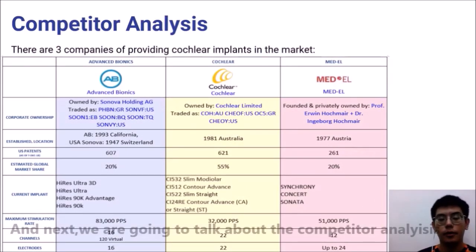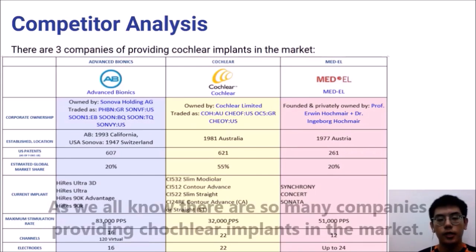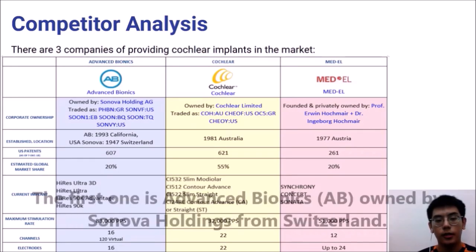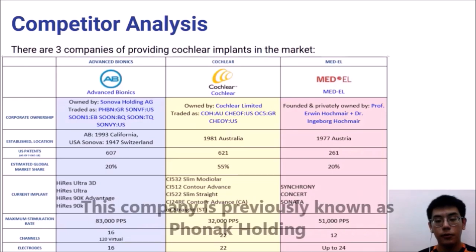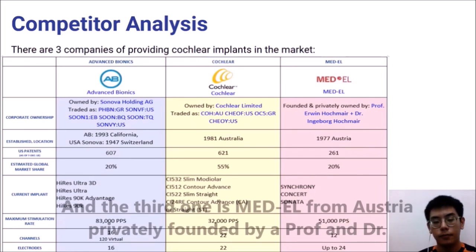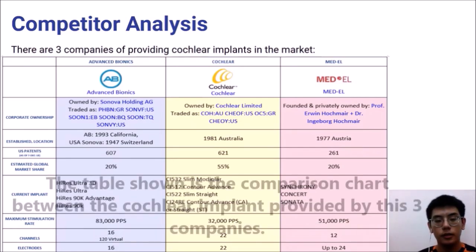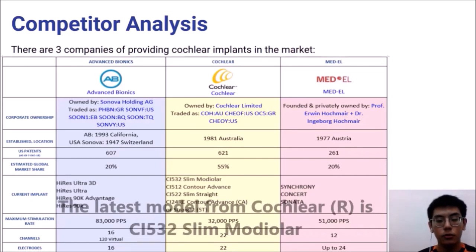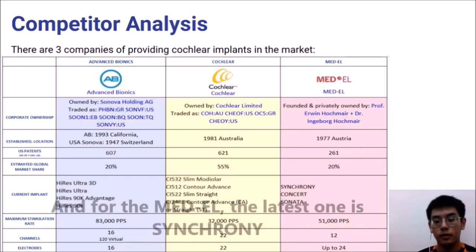Next, we are going to talk about competitor analysis. There are many companies providing cochlear implants in the market, and today we will cover the top three. The first is Advanced Bionics, owned by Sonova Holding from Switzerland. The second is Cochlear, owned by Cochlear Limited from Australia. The third is MED-EL from Austria. The comparison chart shows the cochlear implants provided by these three companies. Advanced Bionics' latest model is the Hi-Res Ultra 3D, Cochlear's latest model is the CI532 Slim Modular, and MED-EL's latest is the Synchrony.